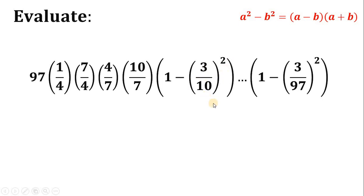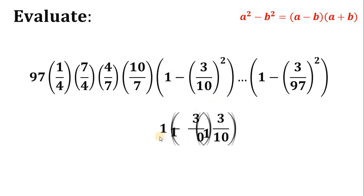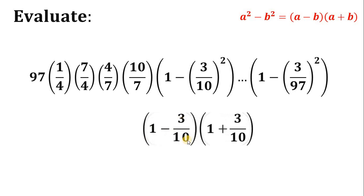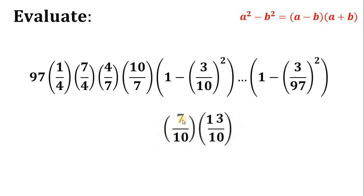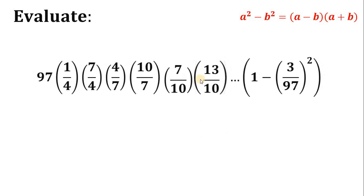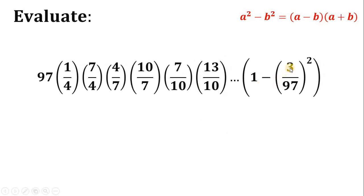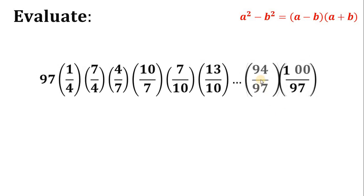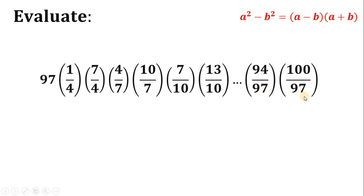Similarly, 1 minus 3 over 10 quantity squared factors as 1 minus 3 over 10, multiplied by 1 plus 3 over 10, which simplifies to 7 over 10 multiplied by 13 over 10. And for the last term, 1 minus 3 over 97 quantity squared factors as 94 over 97 multiplied by 100 over 97.